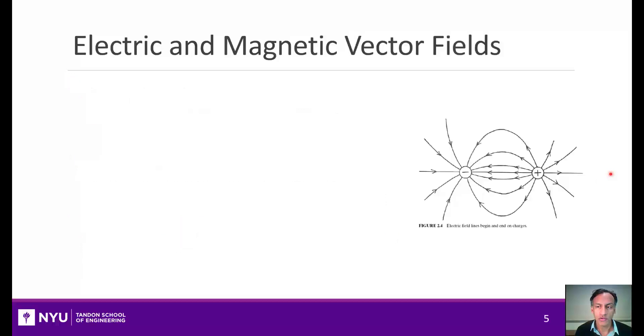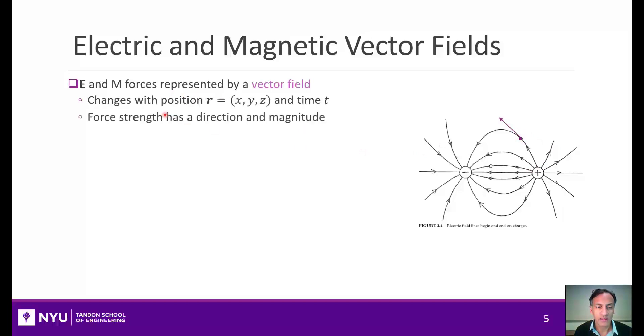Let's look a little more into how we mathematically describe electromagnetic fields. Electromagnetic forces are represented by a vector field. At every position, like this purple dot here, the force will have a strength which is represented by a direction and a magnitude. Anything with a direction and a magnitude is represented mathematically as a vector. That means at every point in space we have a vector like this, and these will create these force lines.